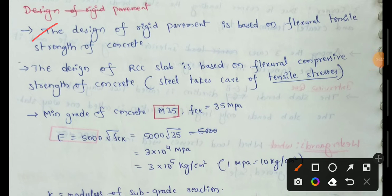The design of rigid pavements is based on the flexural tensile strength of concrete. The design of RCC slab is based on the flexural compressive strength of concrete, as steel takes care of tensile stresses.